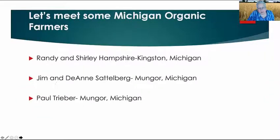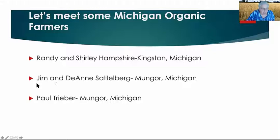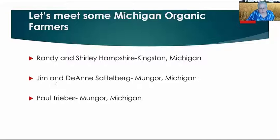I've been working with these farming families for several years. Randy and Shirley Hampshire from Kingston, Michigan are organic farmers in both dairy and field crops, and they've also dealt with organic vegetables. Jim and Deanne Sadelberg from Munger, Michigan have started not only production of beans and grains but processing of dry beans. And Paul Treiber from Munger, Michigan is an organic farmer who produces primarily beans with rotations of various grains, selling at local markets like the Organic Farmers of Michigan Co-op.